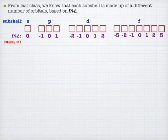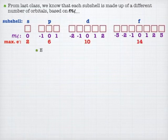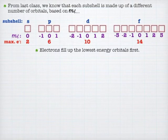And so that means each of those subshells have a certain max number of electrons. S's can hold two, P can hold six, D can hold ten, F can hold fourteen.